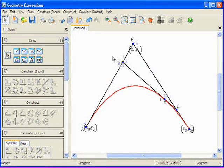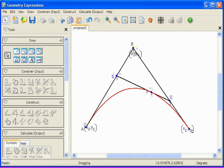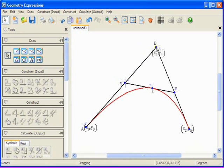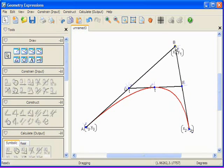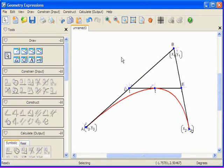There I have the locus and we can see how that is traced out by F. We can also change the curve by dragging the points around.